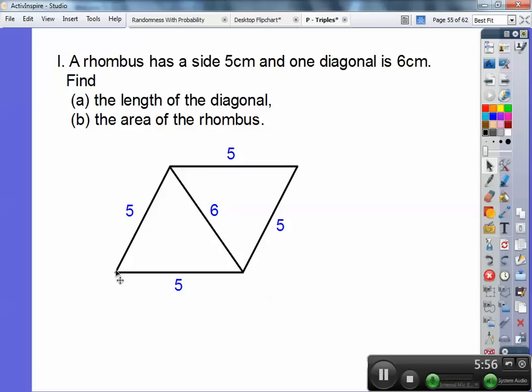The other one says, part A says, find the length of this diagonal right here. So if I draw that other diagonal in there, what happens is a rhombus is a parallelogram and diagonals bisect each other. So instead of having the whole length being 6, it now becomes 3 and 3. And what's special about rhombus is the diagonals are perpendicular. So I have a right angle or a right triangle.